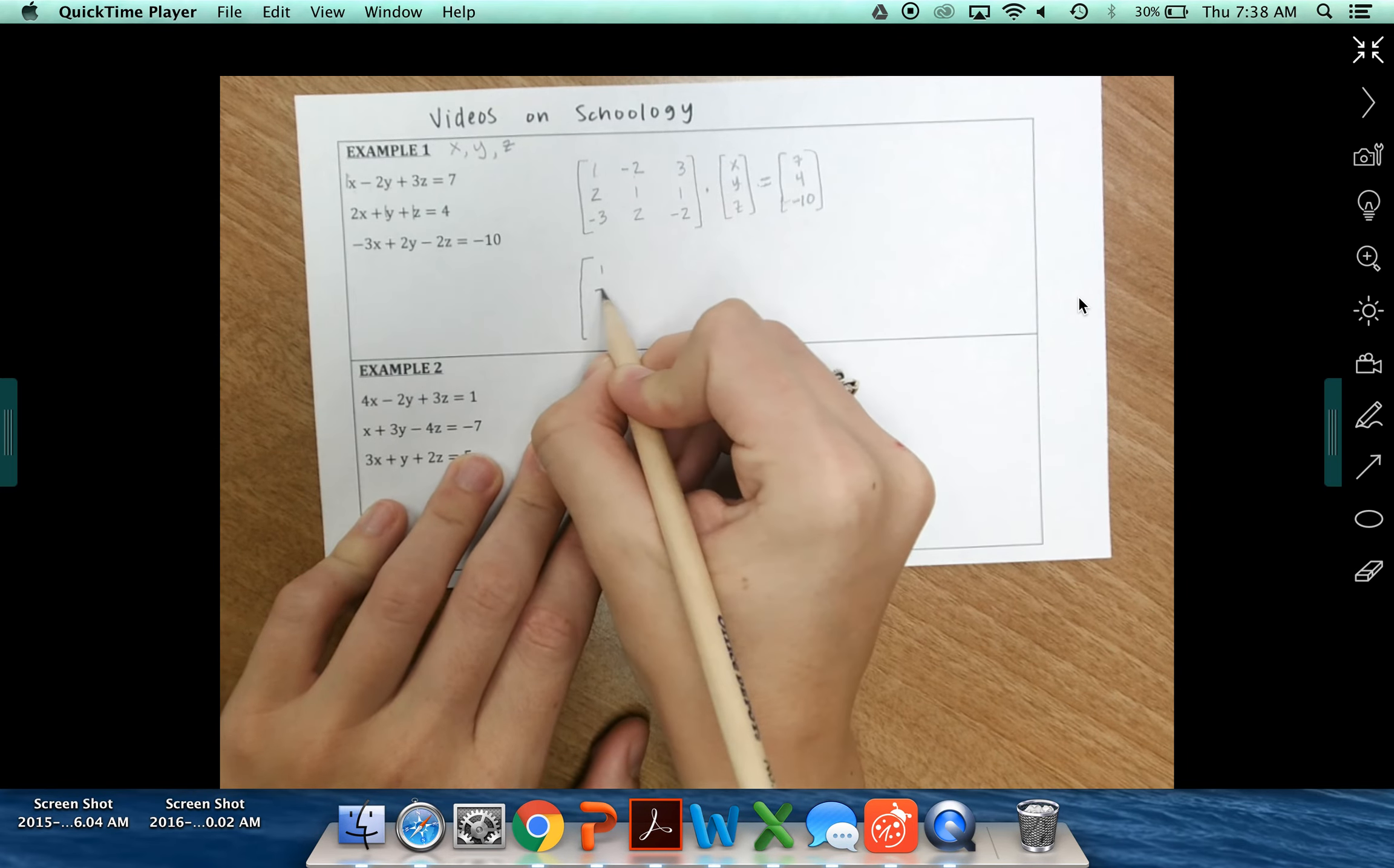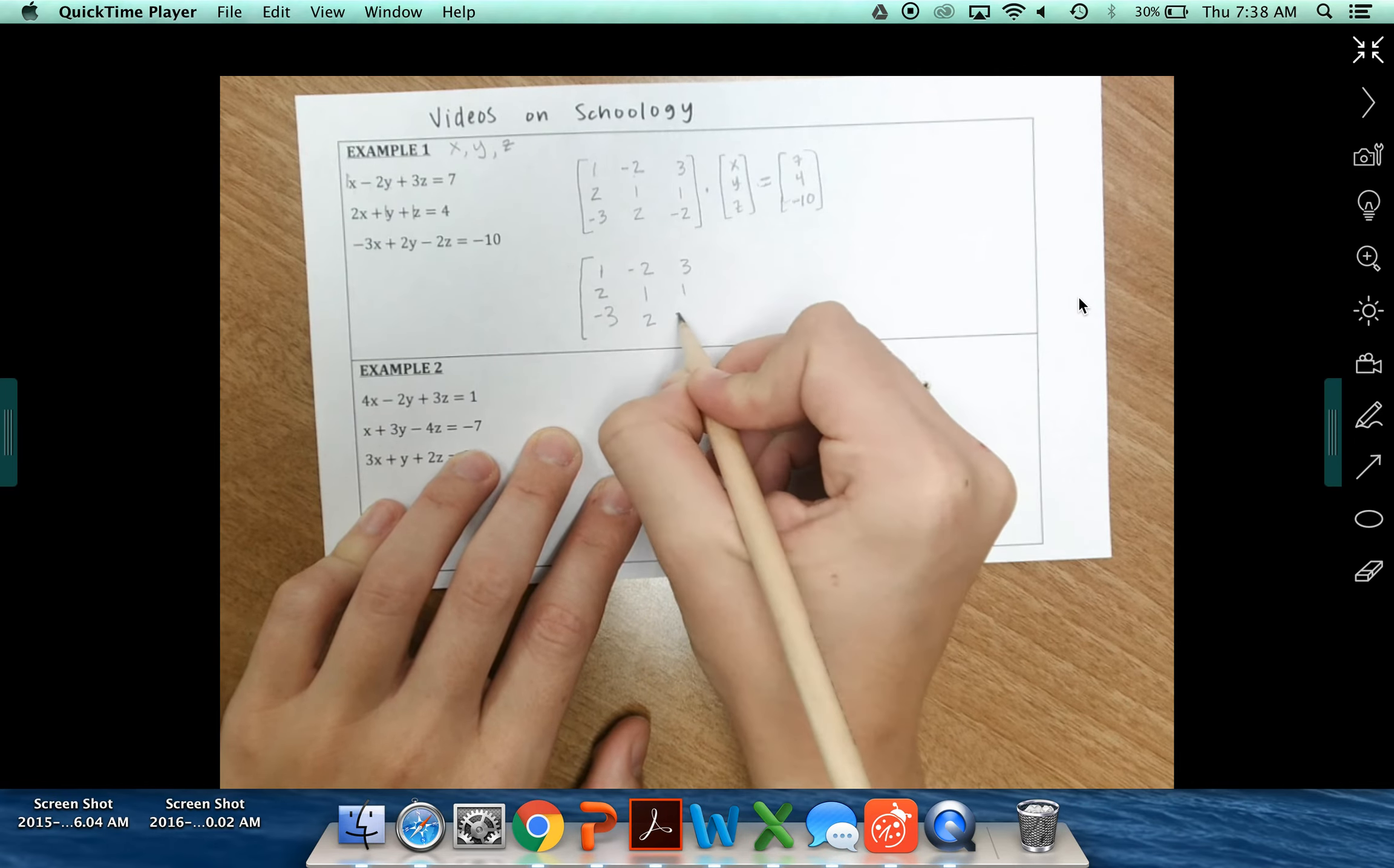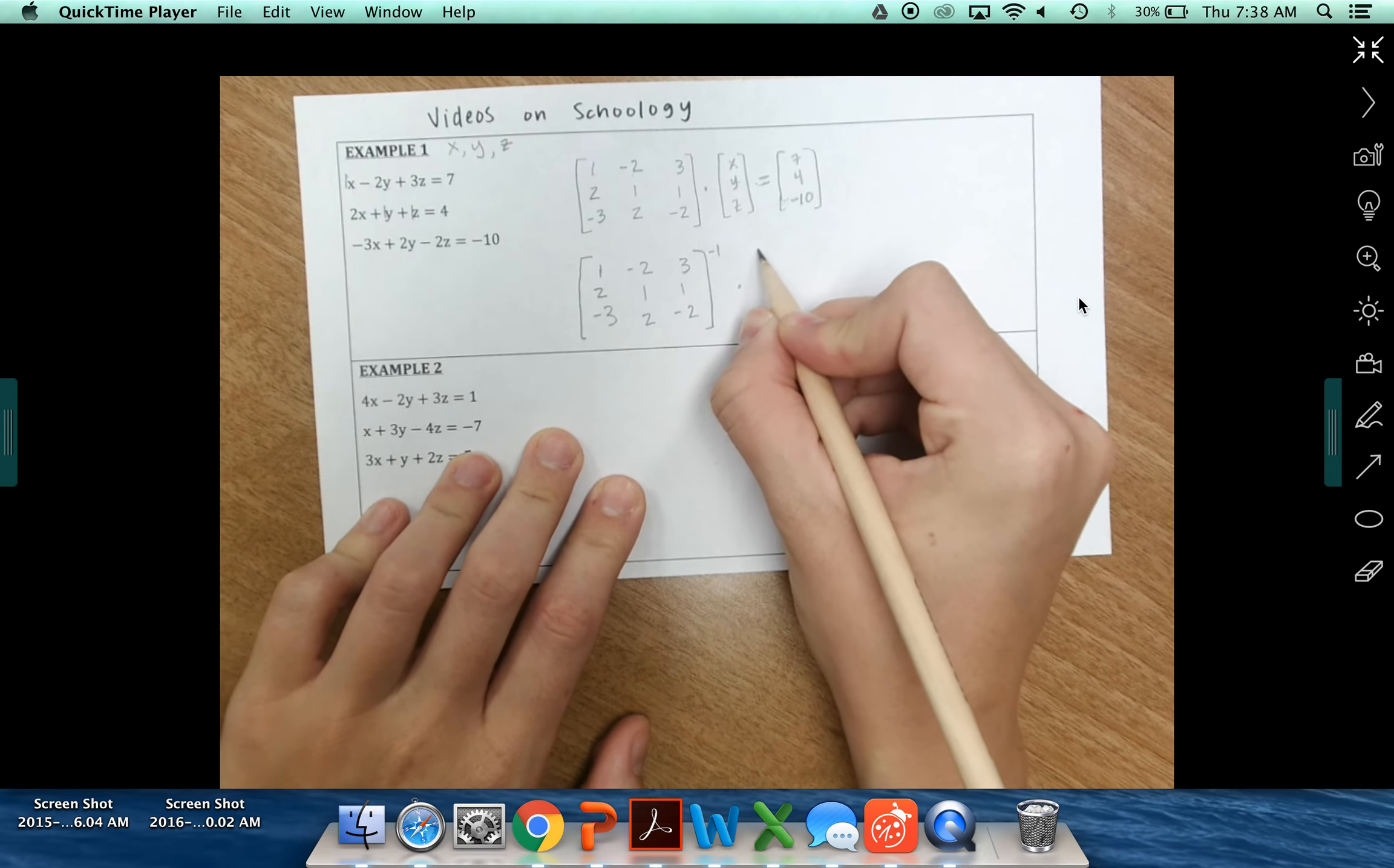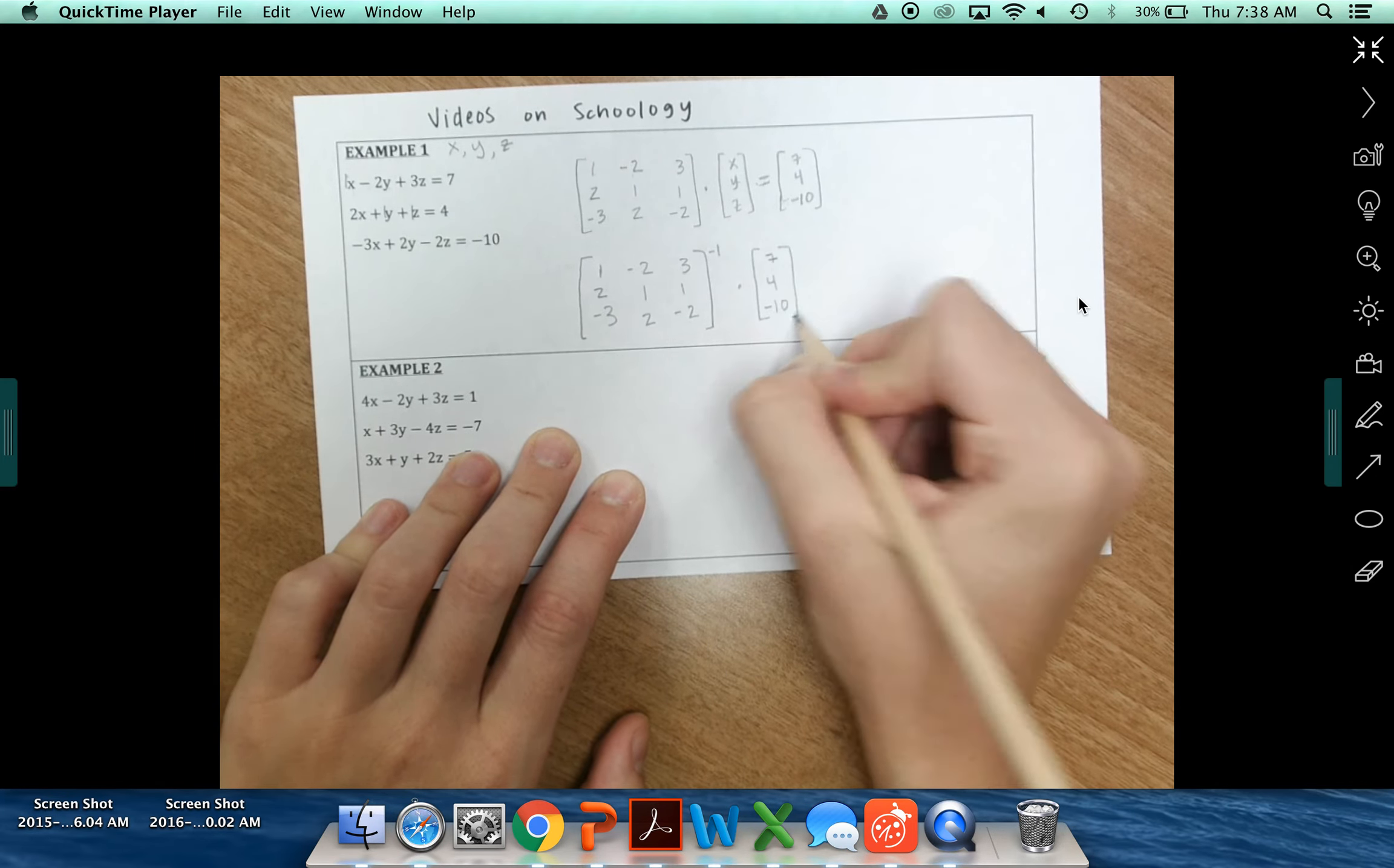So you'll have 1, 2, negative 3, negative 2, 1, 2, 3, 1, negative 2. The inverse, so that's just an exponent and negative 1. And that's going to be multiplied by our solutions over here. So by 7, 4, negative 10.